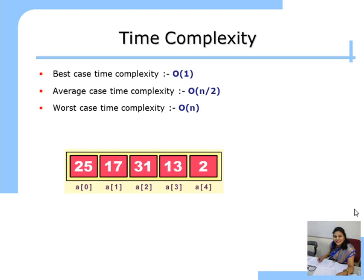If we want to find 31, it is at the middle position of the array — this is the average case input for linear search. We require 3 comparisons: 0th location, 1st location, and 2nd location. So the average case time complexity of linear search is O(N/2), where N is the size of the array.